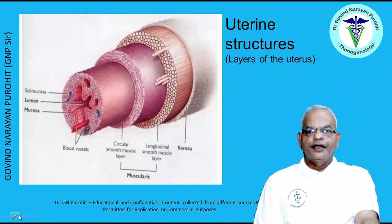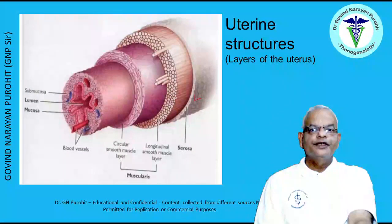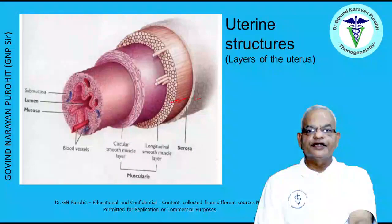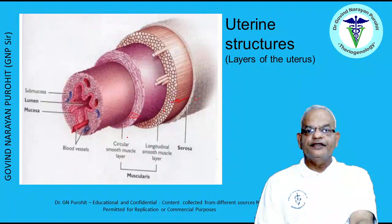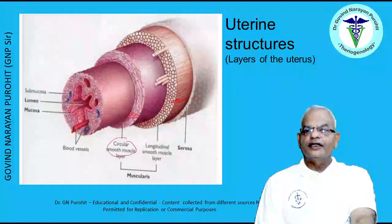In cross-section, the layers of the uterus include the serosa layer outermost, then the perimetrium, then the longitudinal muscles and circular muscles forming the myometrium, then the endometrium, and the lumen of the uterus which is hollow inside. There is also the submucosa and the mucosa.